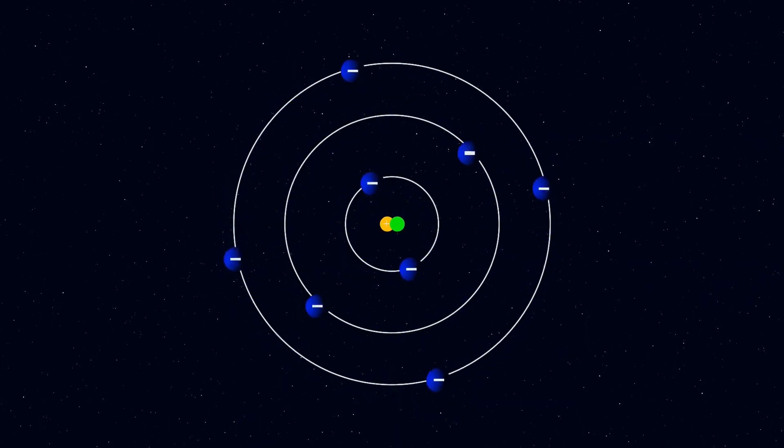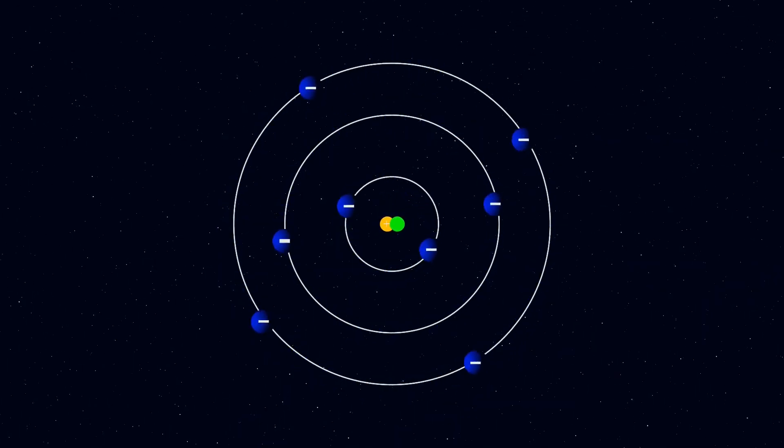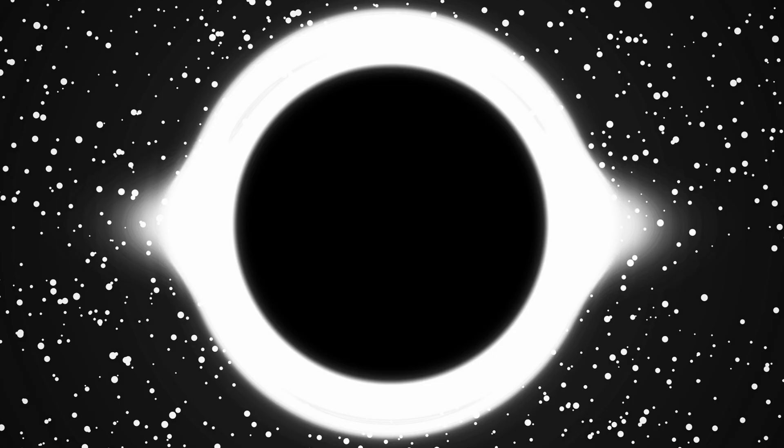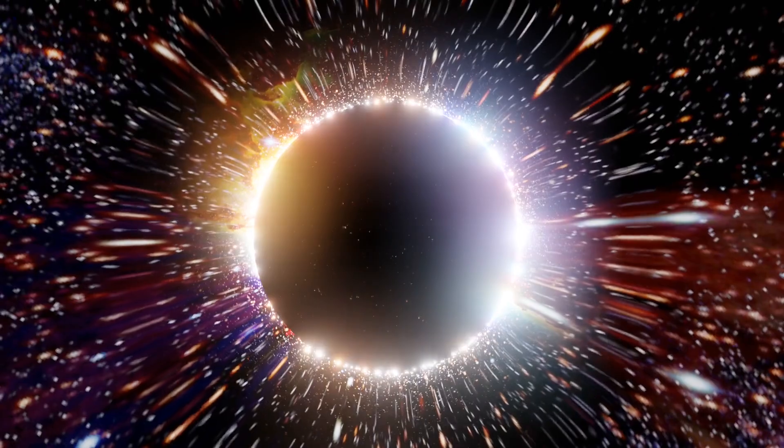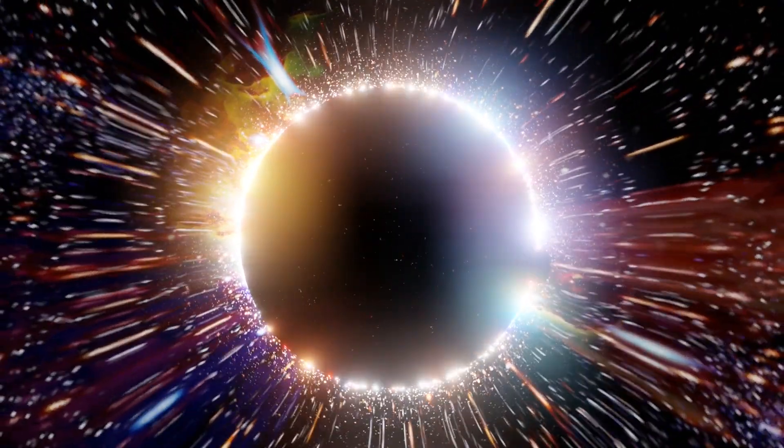But, the Loop Quantum Gravity theory can solve the information paradox very easily. As per this theory, the information is not lost in the black hole. It simply gets transferred to the white hole. So, the black hole information paradox doesn't arise here.